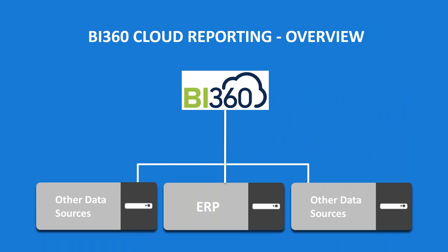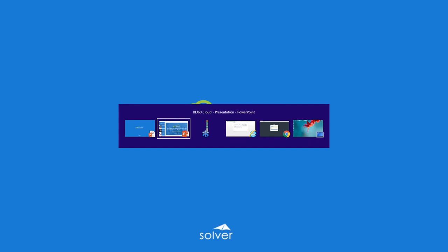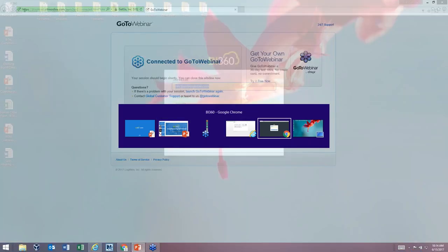Looking at the slide showing different data sources — your ERP system, payroll, CRM, and others — the data is collected and brought into the BI360 Cloud for uniform reporting in one location against all that data. The demonstration will start by looking at how to get BI360 Cloud up and running, loading data in, then we'll look at report design, report management, and use of reports.